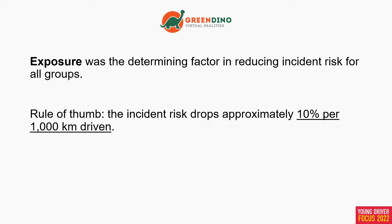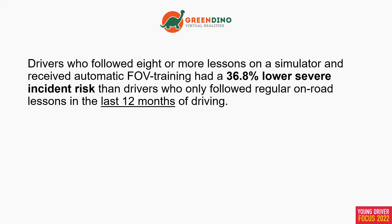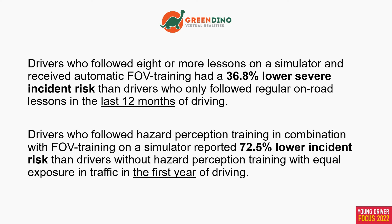We formulated a rule of thumb: the incident risk drops approximately 10% per 1,000 kilometers driven. This means it is not our goal to lower the amount of kilometers driven through higher passing rates. The results showed that drivers who followed eight or more lessons on a simulator and received automatic field of view training had a 36.8% lower severe incident risk than drivers who only followed regular on-road lessons in the last 12 months of driving. Drivers who followed hazard perception training in combination with field of view training on a simulator reported a 72.5% lower incident risk than drivers without hazard perception training, with equal exposure in traffic in the first year of driving. Because hazard perception training was introduced in 2013, we had no data on incidents in the last 12 months of driving for that group.